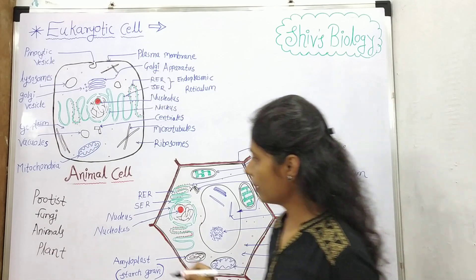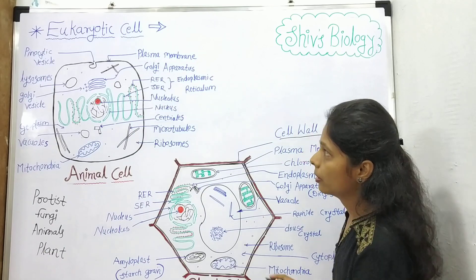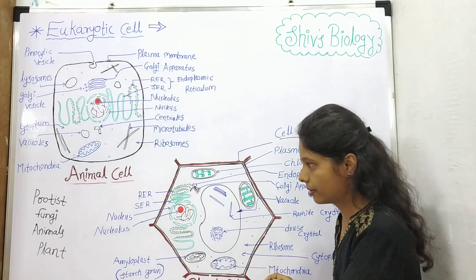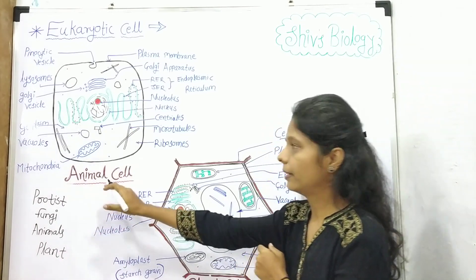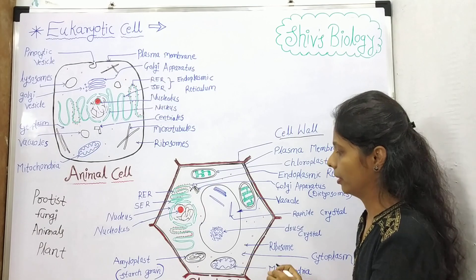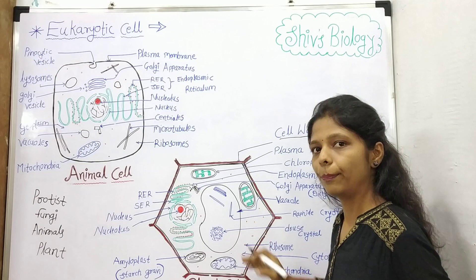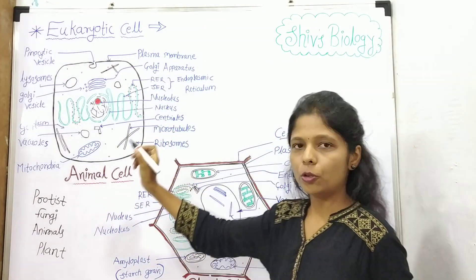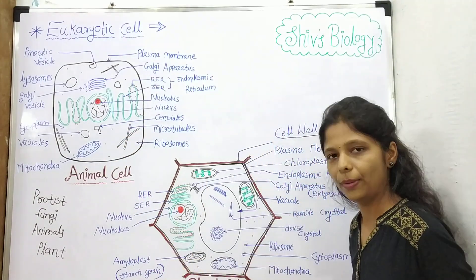Plant cells and animal cells differ in several ways. Both have a plasma membrane, but cell walls are present only in plant cells. In animal cells, vacuoles are smaller in size and temporary; in plant cells, vacuoles are larger in size and permanent. Another difference is chloroplast — chloroplast is present in plant cells and absent in animal cells. Fourth, centrioles are present only in animal cells and absent in plant cells.